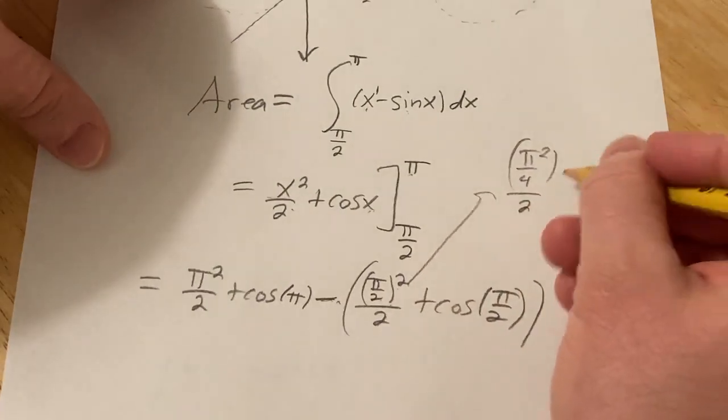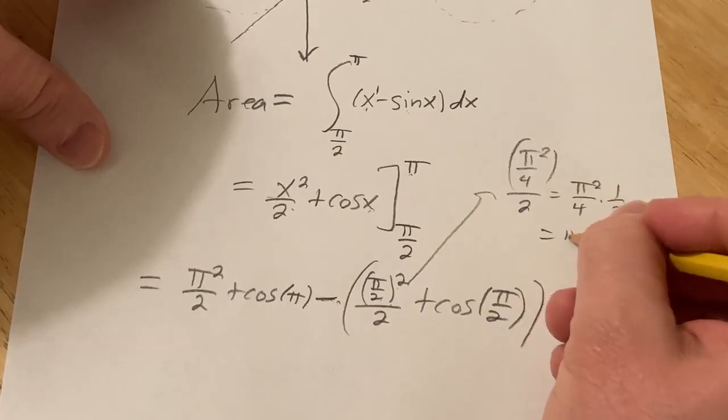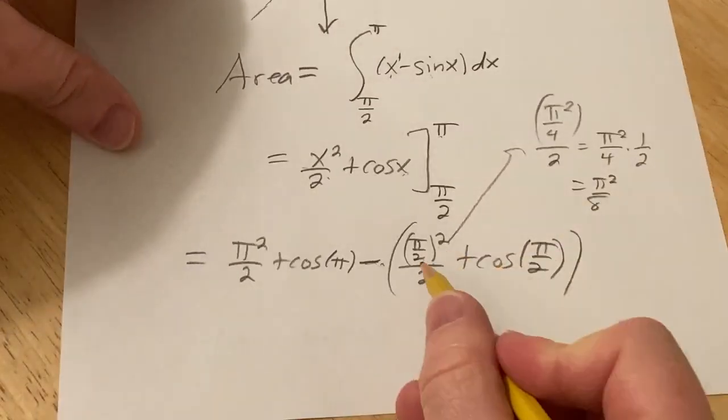But that's really, when you divide by 2, you really multiply by 1 half. So it's actually pi squared over 8. Okay, so this is going to be pi squared over 8.